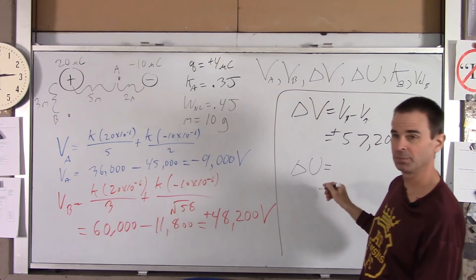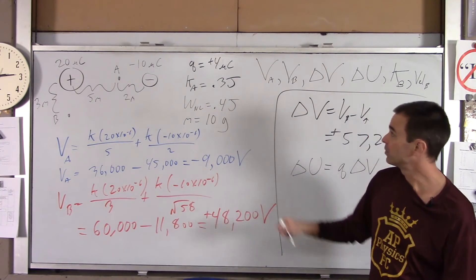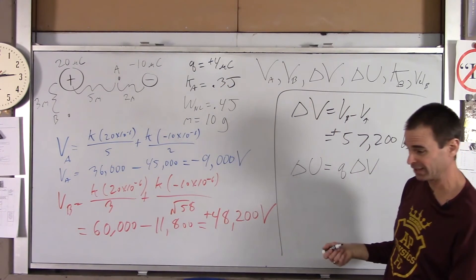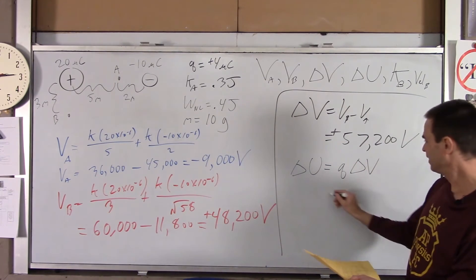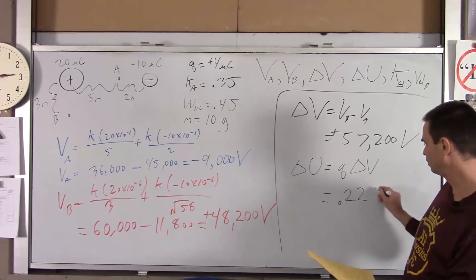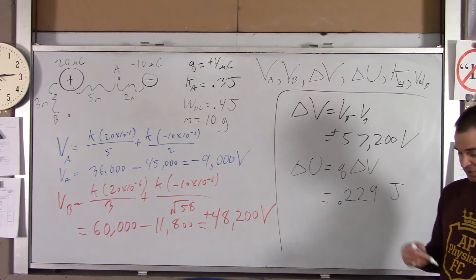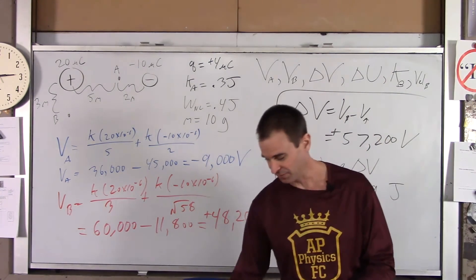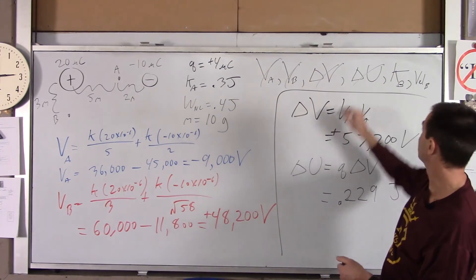Now for the change in potential energy, delta U is simply Q times delta V. Q is 4 microcoulombs, so we take 57,200 times 4×10⁻⁶, which gives about 0.229 joules, or 229 millijoules. We're doing three significant figures throughout.